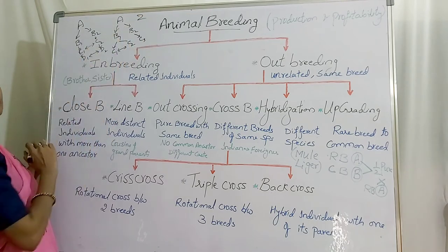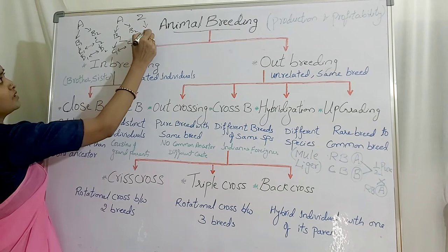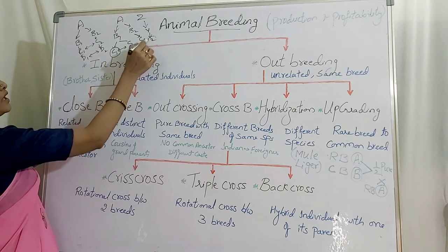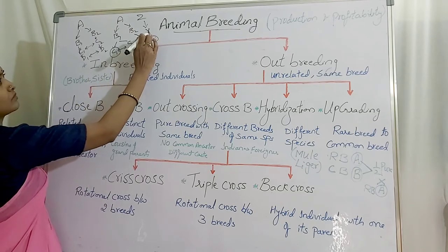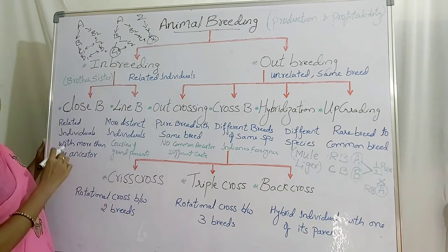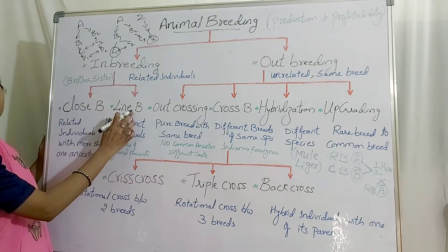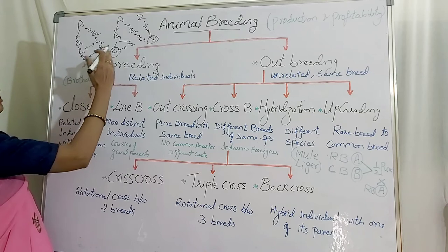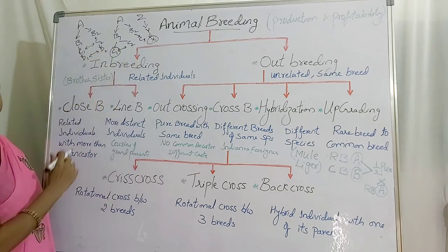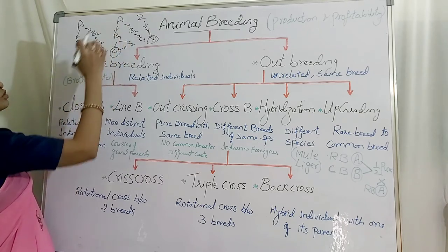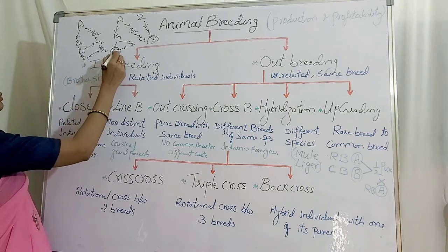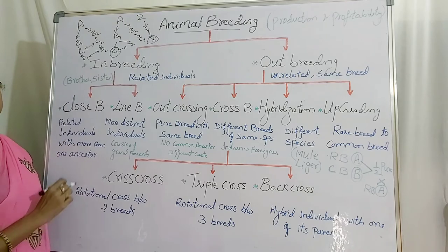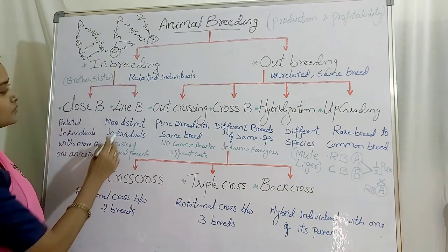If Z is the cousin of A, and there is a cross between C and Z (or C and X), then that is line breeding. They belong to related individuals but are distinctly related — they do not belong to the same grandparent. The mating between a grandparent and his cousin's offspring is called line breeding.